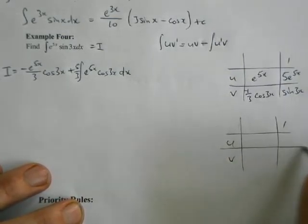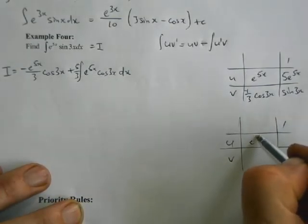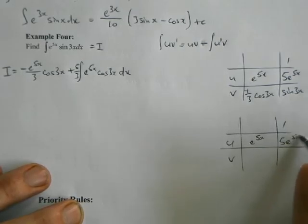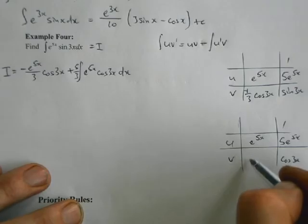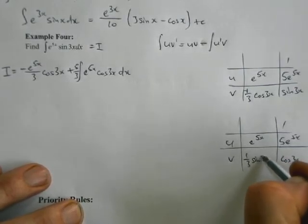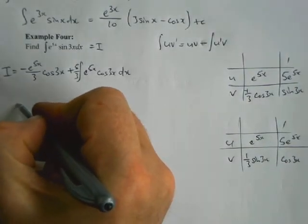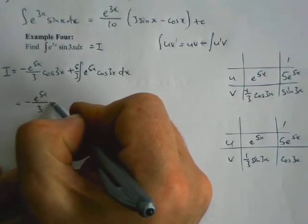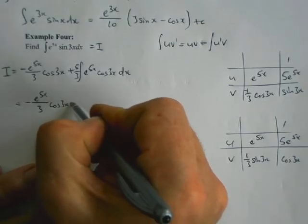So I'm just going to go and do my parts routine again. So u, v, u dash, v dash. My e to the 5x differentiates to 5 e to the 5x, and my v dash is cos 3x, and my integral that I get is one third sine 3x.